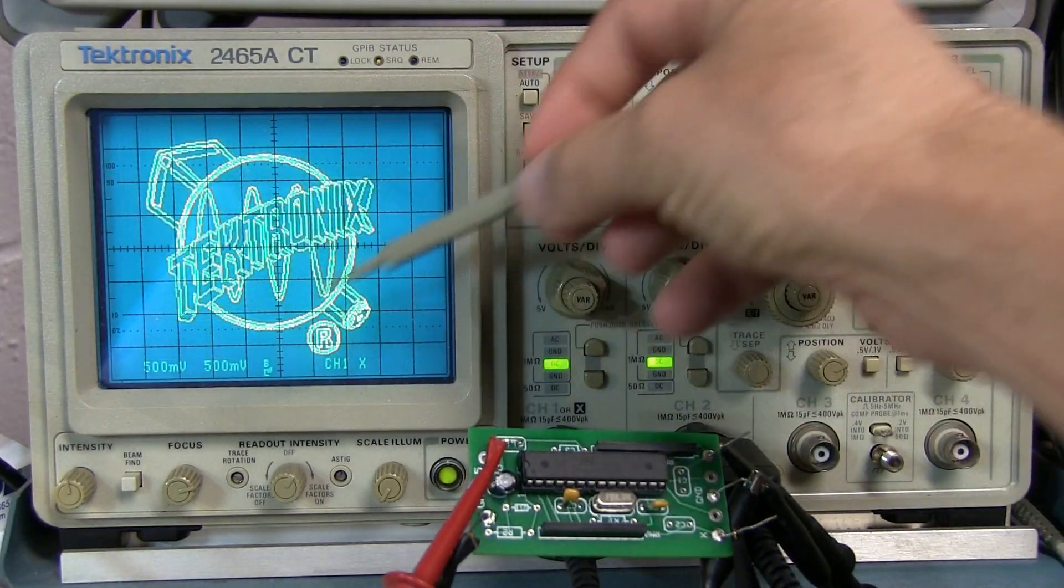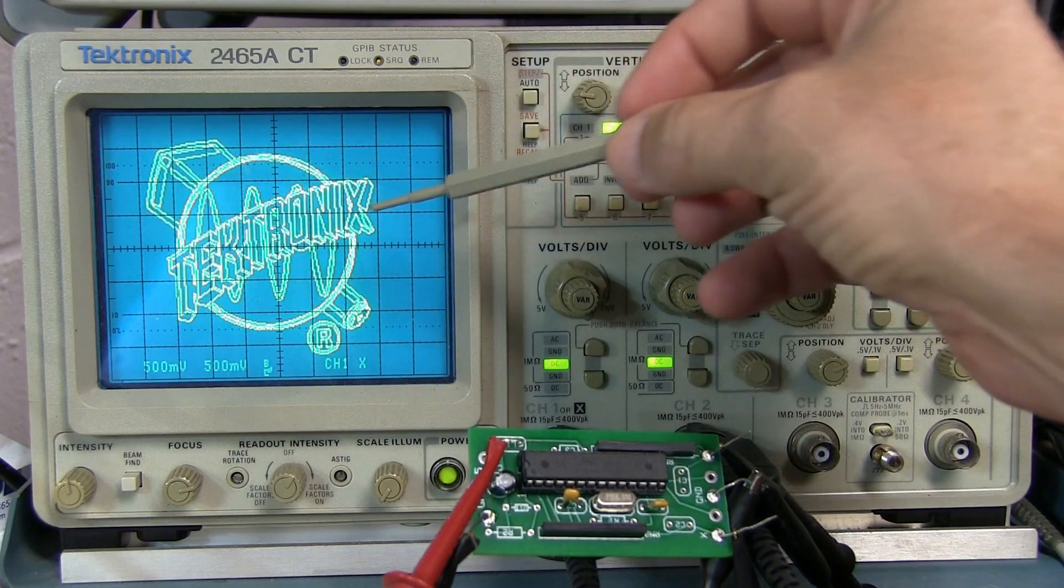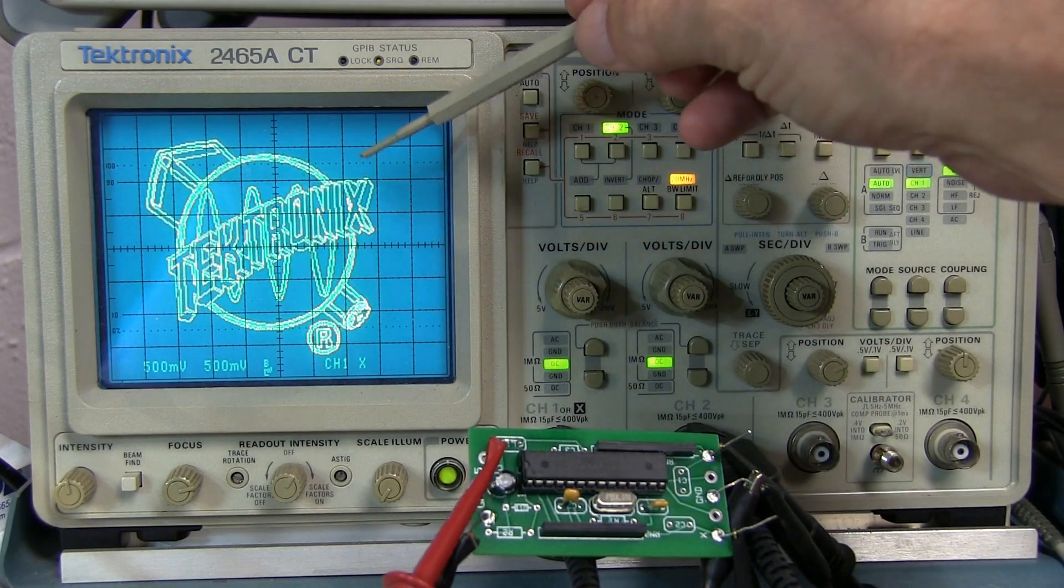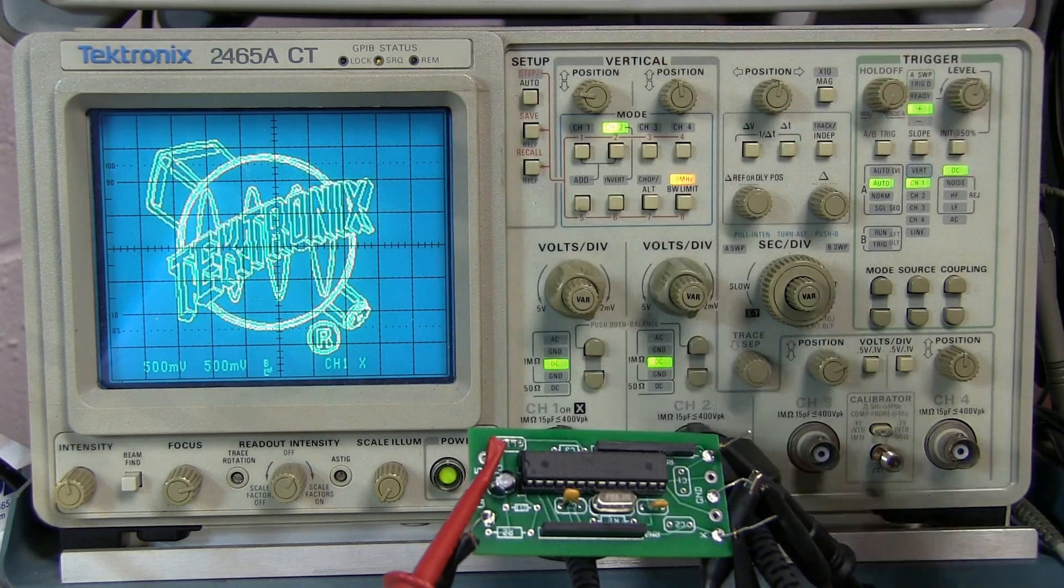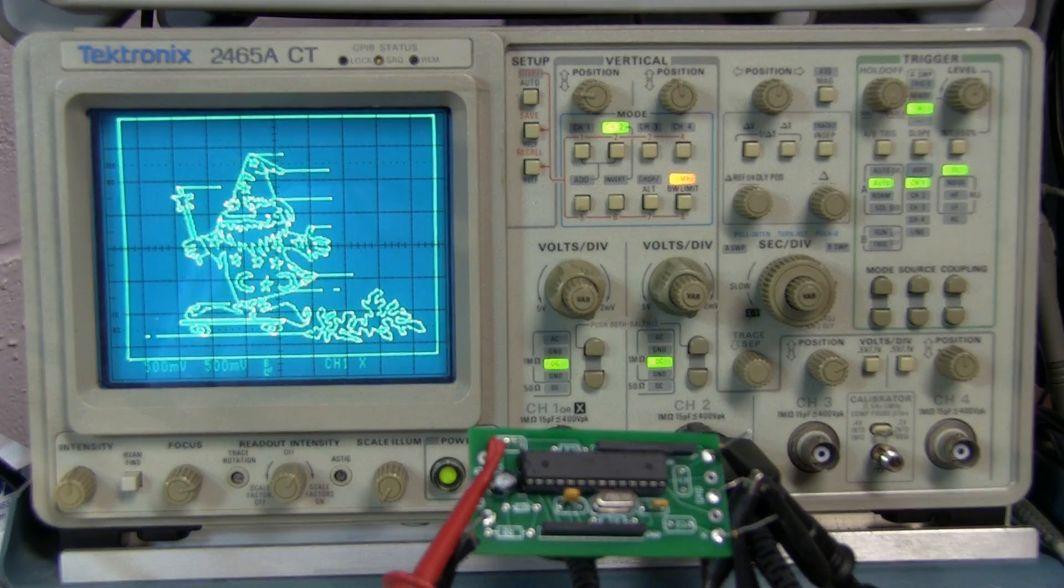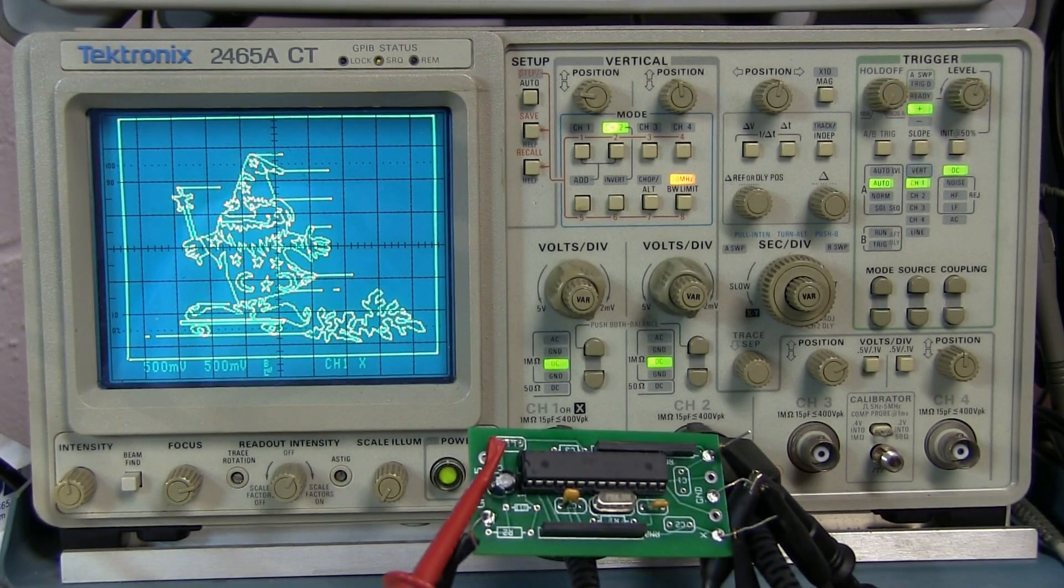One that displays one of the older Tektronix logos called the Bug logo, and the other image is the one called the Wizard. This is something that made an appearance in actually some of the older schematics in some of the Tektronix service manuals.